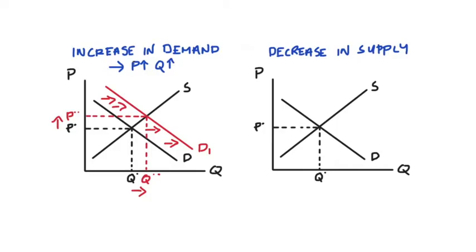Alright, so let's do our supply. A decrease in supply means that for every price the firm supplies less and so we shift our supply curve to the left. As a result, our price is going to increase so we go from P star to P star star and our quantity decreases. So Q star star is less than Q star. So we can write those results here too.